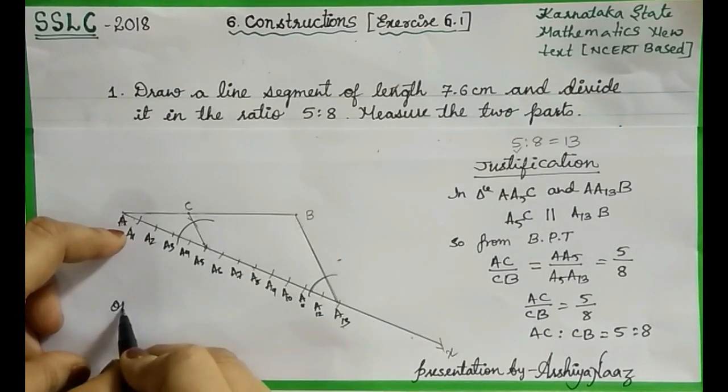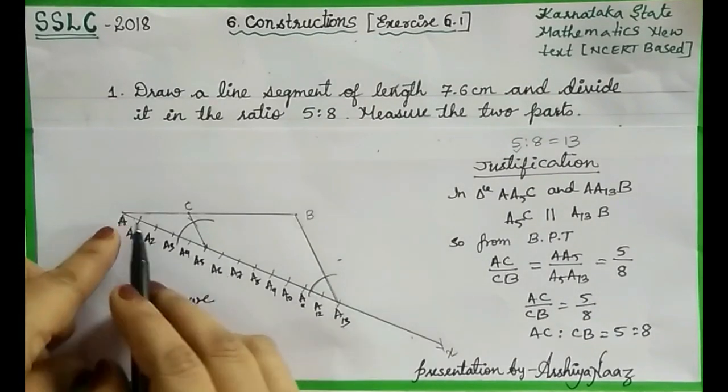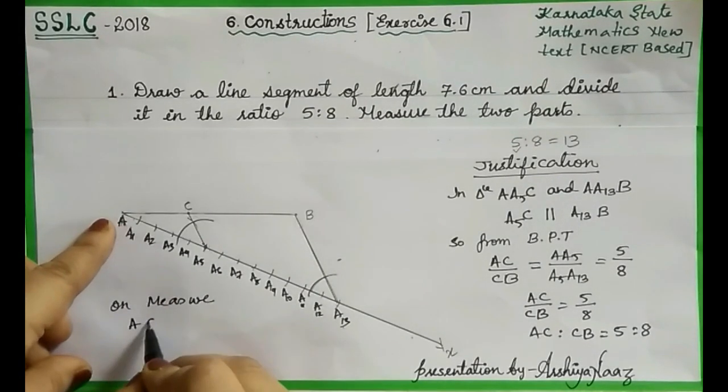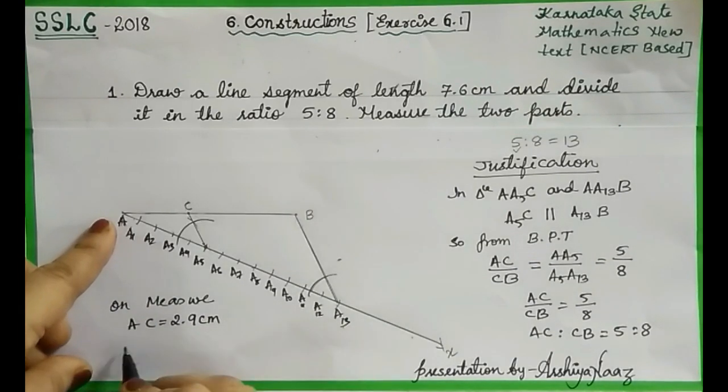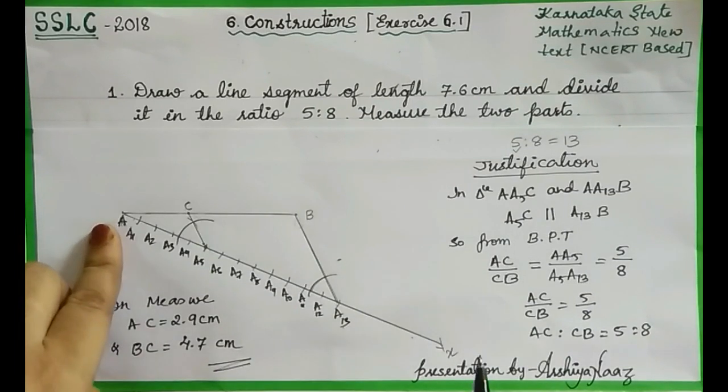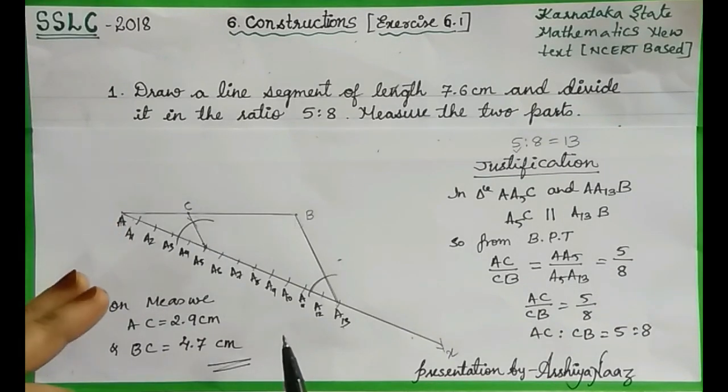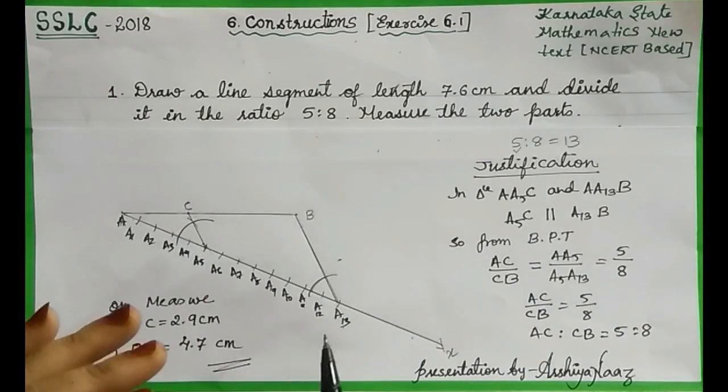On measuring with scale, we get AC is equal to 2.9 centimeter and BC is equal to 4.7 centimeter. Dear students, hope you have understood the construction. If you are interested, watch our next problem in the next video. Thank you one and all.